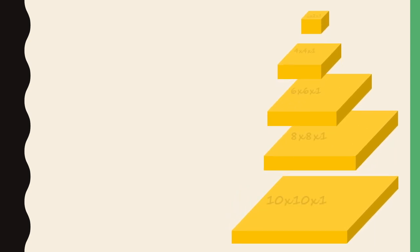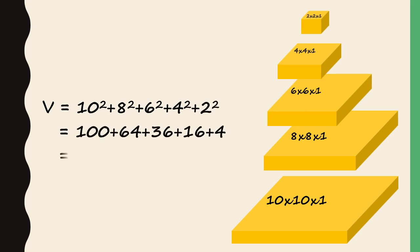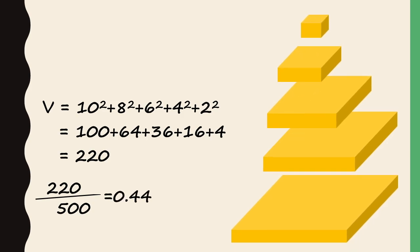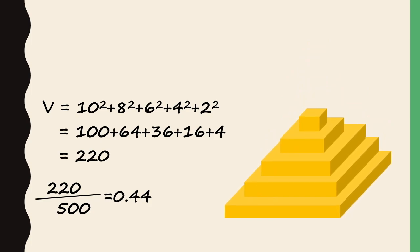This gives us a volume of 10 squared plus 8 squared plus 6 squared plus 4 squared plus 2 squared, which all up gives us 220. And if we look at this as a ratio of what an equivalent polyhedron with a square that were 10 by 10 and a height of 5, or 500 units in volume is, then we get 220 over 500, or 0.44, as the ratio of this pyramid's volume to the polyhedron volume.